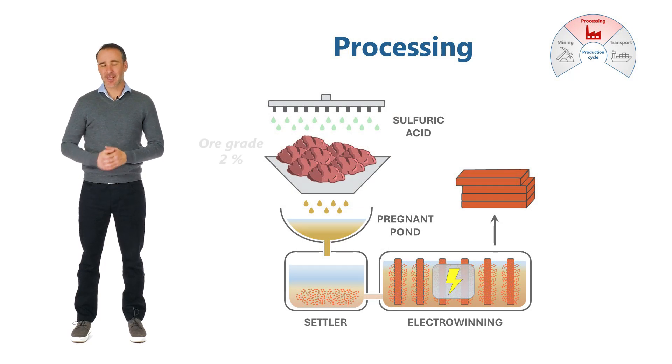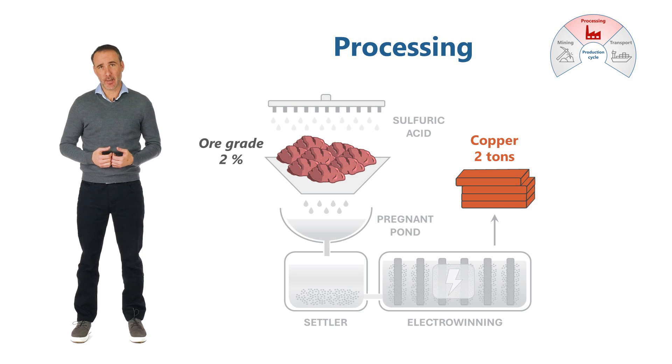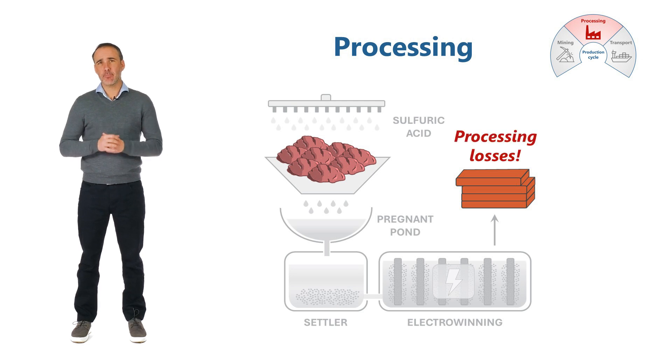Although the ore contains 2 tons of copper, we can't extract all of that copper. Perhaps the processing plant ultimately extracts 85% of the copper. The processing phase has what we call an 85% recovery rate.